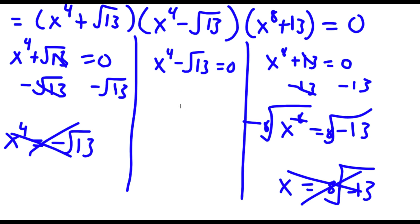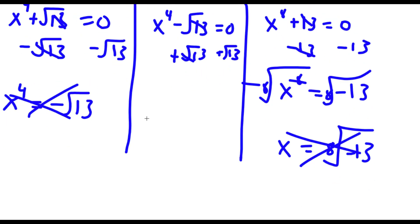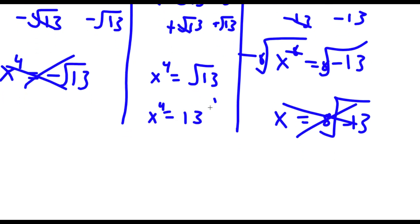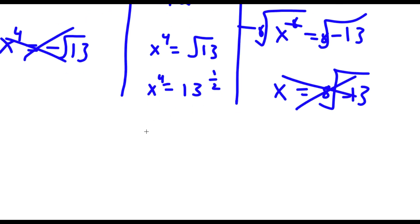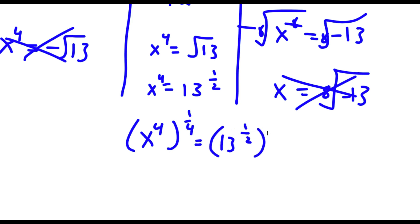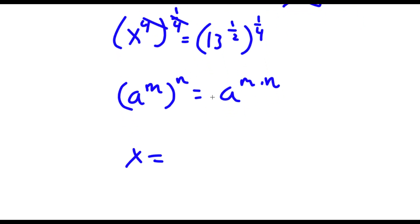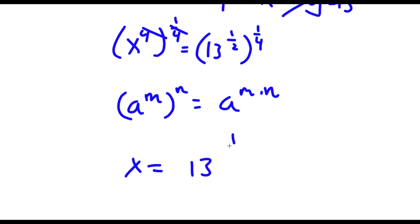So now all we are left with is x to the power of 4 minus the square root of 13 equals 0. Add the square root of 13 on both sides, so now I have x to the power of 4 equals the square root of 13. The square root of 13 is the same thing as 13 to the power of 1 half. Now if I take the power of 1 fourth on both sides — using a to the power of m to the power of n equals a to the power of m times n — 4 times 1 fourth is 1, so these cancel out. So x equals 13 to the power of 1 eighth.